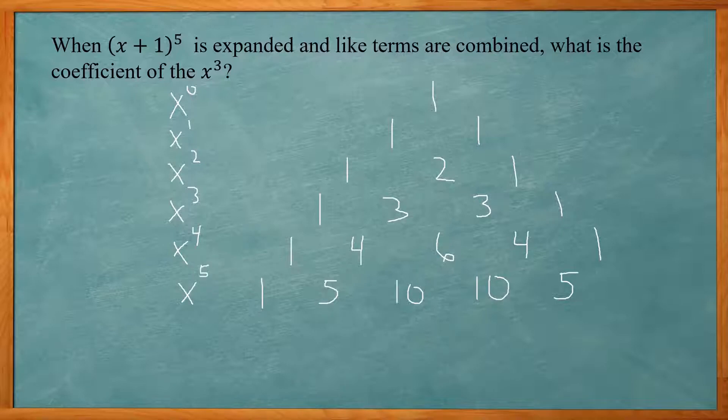Okay, so we have x plus 1 to the 5th power. So our highest exponent will be 5 on the x. So we look here at the end. Oh, there's one more here as a 1. The last one is your constant.